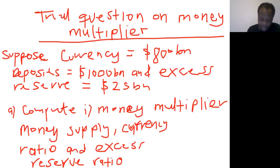Money multiplier, the formula for finding money multiplier is equals to C plus 1, all over C plus R plus E.